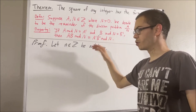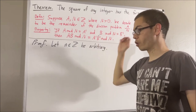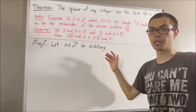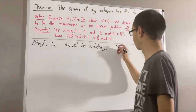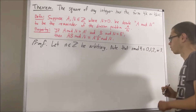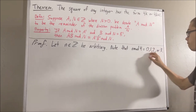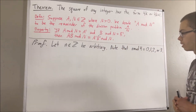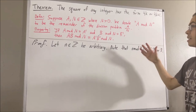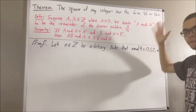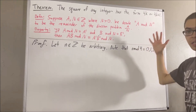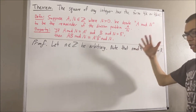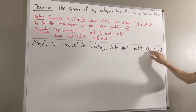We know that there are four possible remainders: the remainder is going to be either 0, 1, 2, or 3. Therefore, n mod 4 is equal to either 0, 1, 2, or 3. What we're going to do is show that in all four cases, n squared has the form 4k or 4k plus 1. To show this, it suffices to show that n squared mod 4 is equal to either 0 or 1 in all four cases.